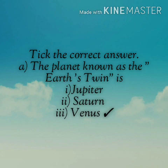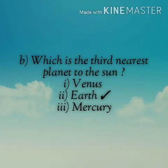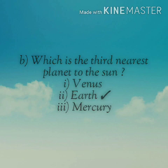Next, tick the correct answers. A: The planet known as the Earth's twin is — options: Jupiter, Saturn, Venus. The right answer is Venus. B: Which is the third nearest planet to the sun? Options: Venus, Earth, Mercury. The right answer is Earth.